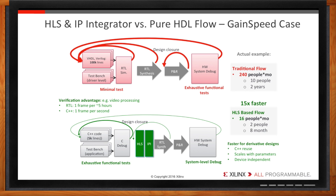This greatly cuts down on the iterations required at the end at the system level. For derivative designs — which most designs are — the benefits are even greater. When targeting a new silicon family, for example, Vivado HLS can take care of targeting the details of the new architecture instead of requiring the user to hand-modify their RTL source. We have other examples that show similar productivity gains.